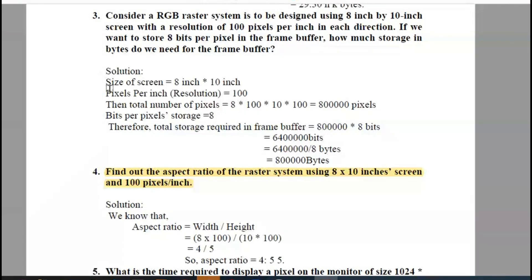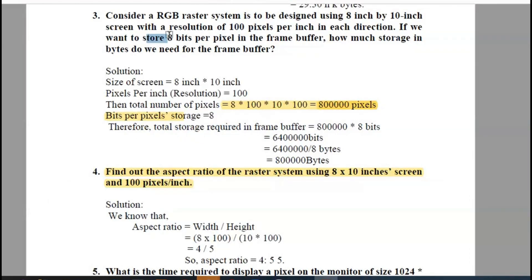The resolution in both directions is 100 pixels, so the total number of pixels is 100 x 100, which equals 10,000 pixels. The number of pixels is 100 x 100, giving a total of 10,000 pixels. The bits per pixel stored is 8 bits. So the total storage required in the frame buffer is calculated from those values.